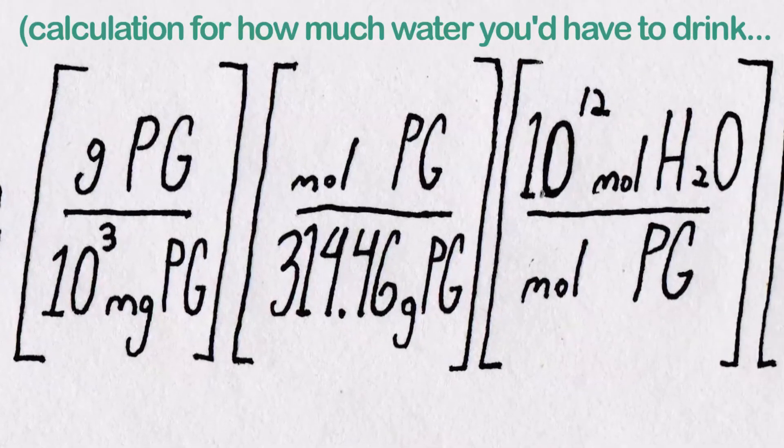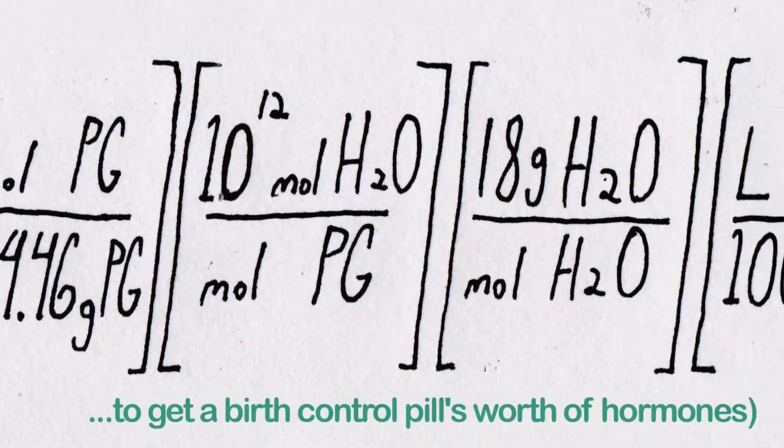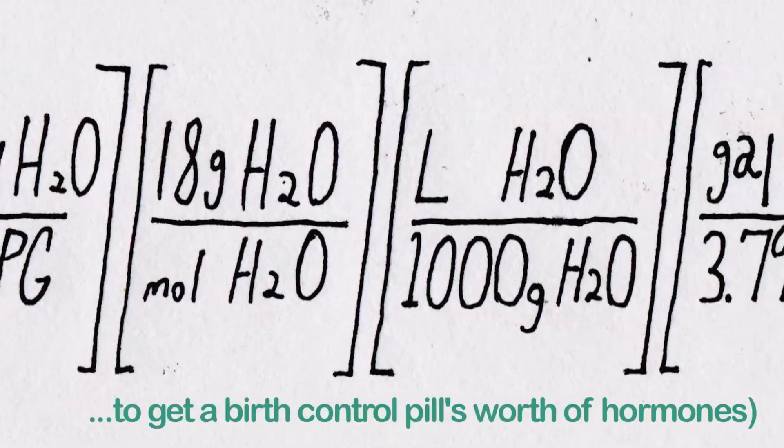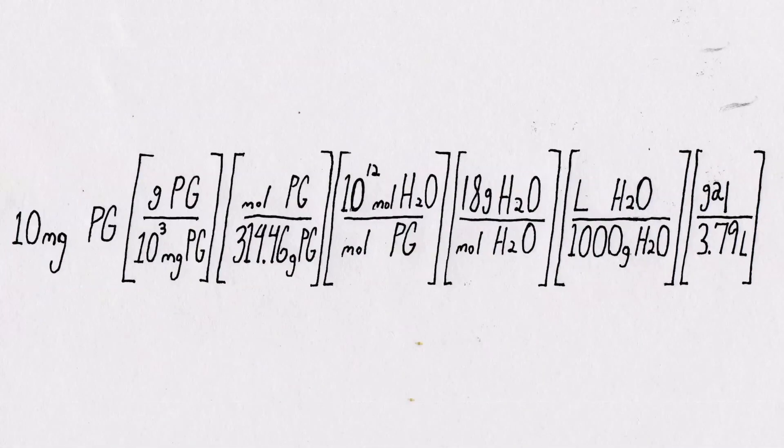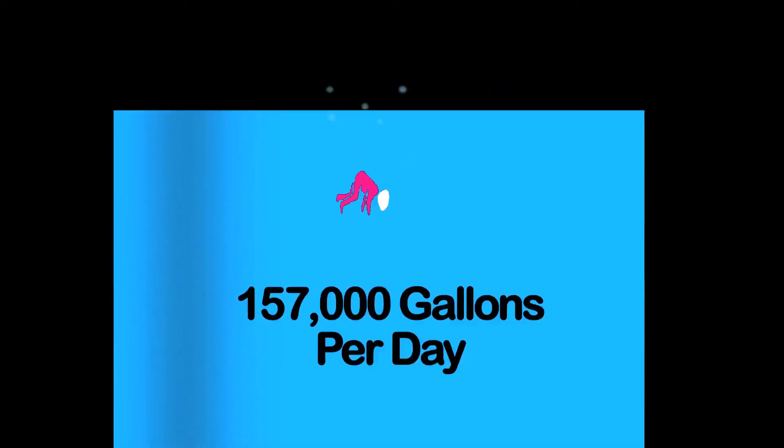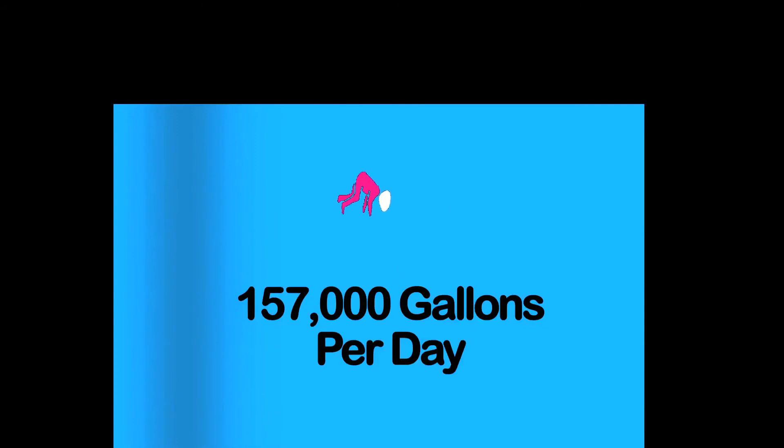Molar calculations are a basic and fundamental part of chemistry. Knowing the molar mass of progesterone and the concentration in drinking water, we can actually calculate the number of liters of water you'd have to drink to get an active dose. How much is it? About 157,000 gallons per day.